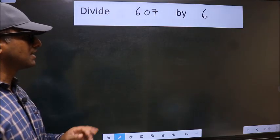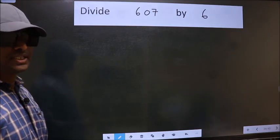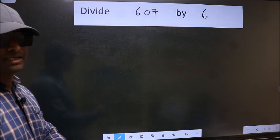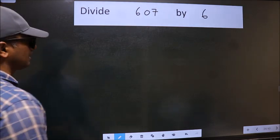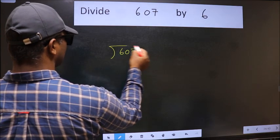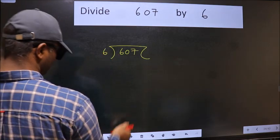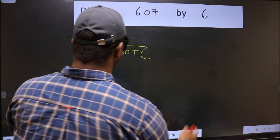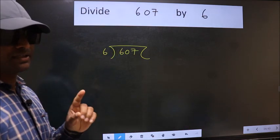Divide 607 by 6. To do this division, we should frame it in this way. 607 here and 6 here. This is your step 1.